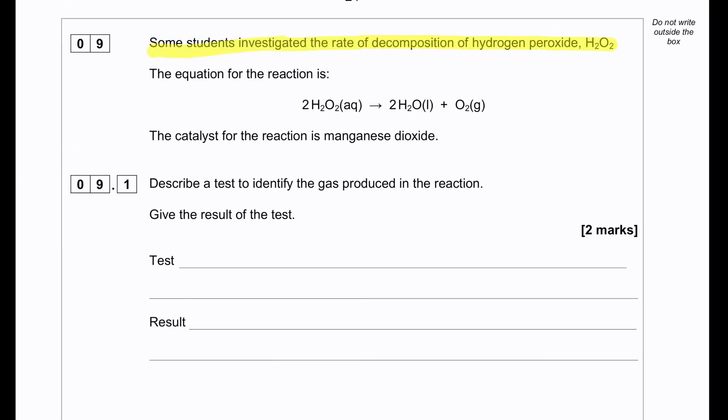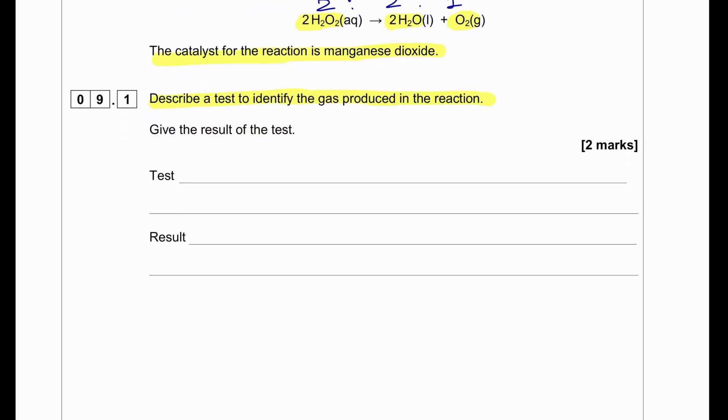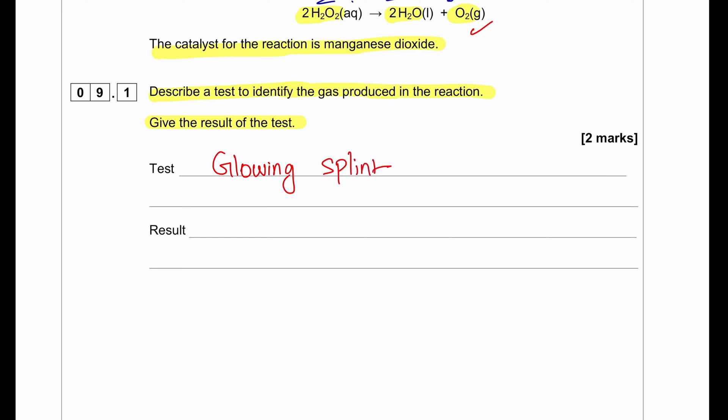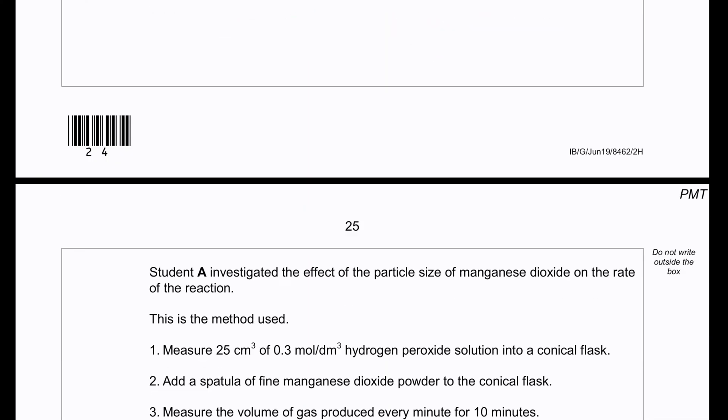Some students investigated the rate of decomposition of hydrogen peroxide. The equation of the reaction is given: hydrogen peroxide reacts to produce water and oxygen in a 2:2:1 ratio. The catalyst for the reaction is manganese dioxide. Describe a test to identify the gas produced in the reaction and give the result. If we are trying to test for oxygen, we can use a glowing splint. A positive result will be the glowing splint will relight into flame.